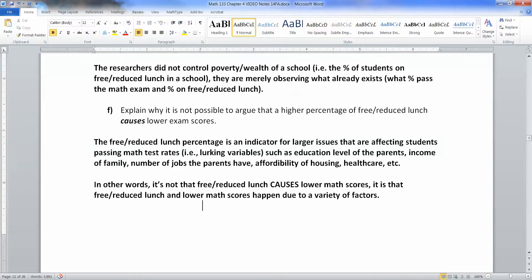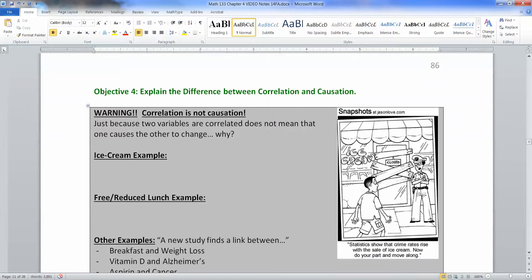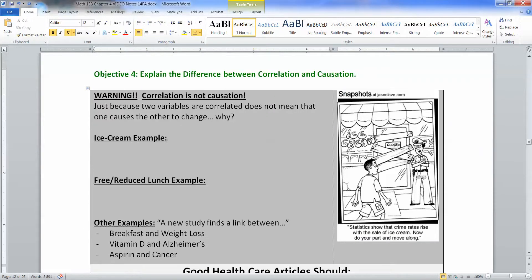Which leads to the last important point about correlation, and it's very important: correlation is not causation. Just because two variables are correlated does not mean that one causes the other.